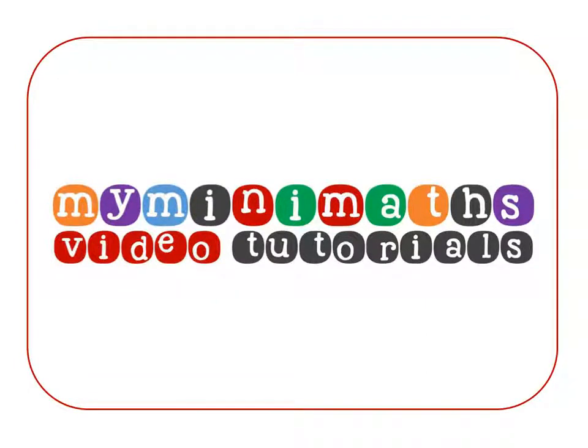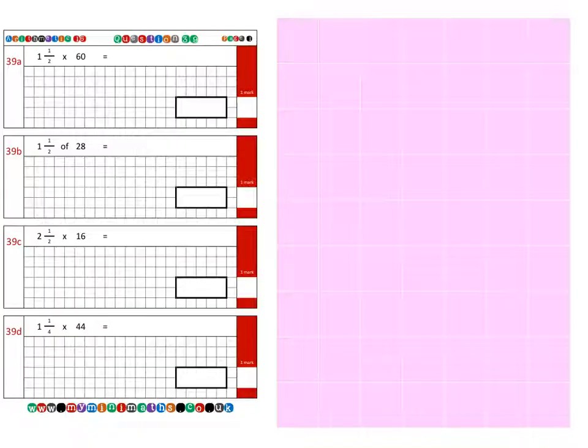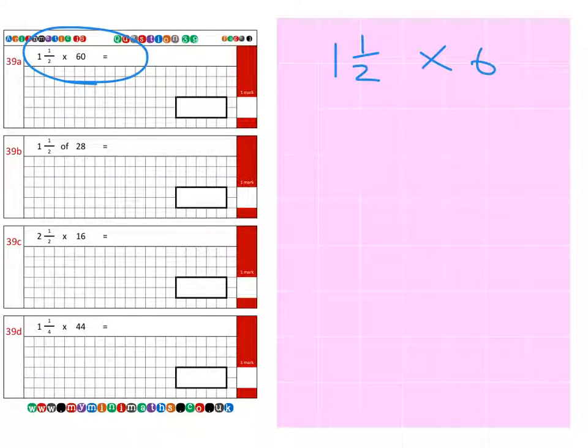Hello and welcome to today's myminimaths.co.uk video tutorial which is calculating a mixed number multiplied by a whole number. First of all is question 39A which is one and a half multiplied by 60 or one and a half lots of 60.